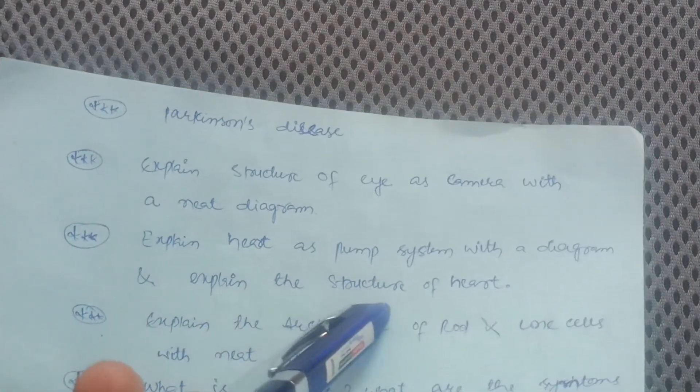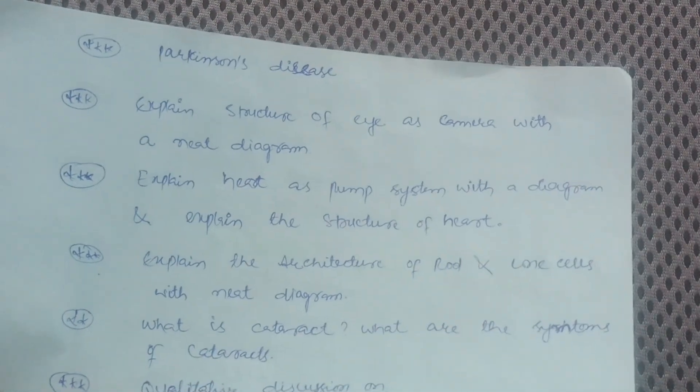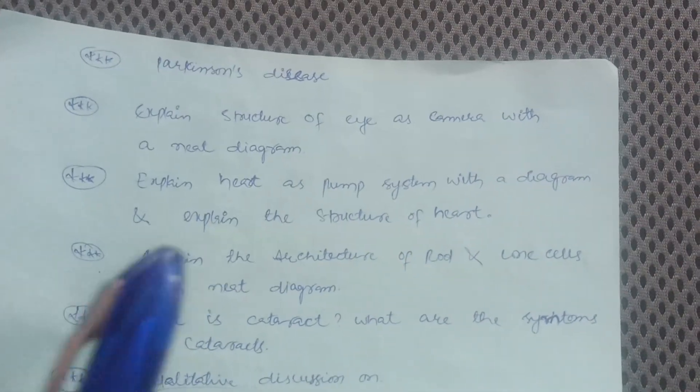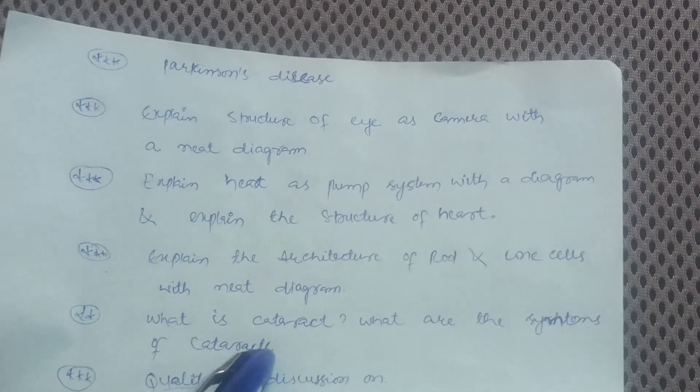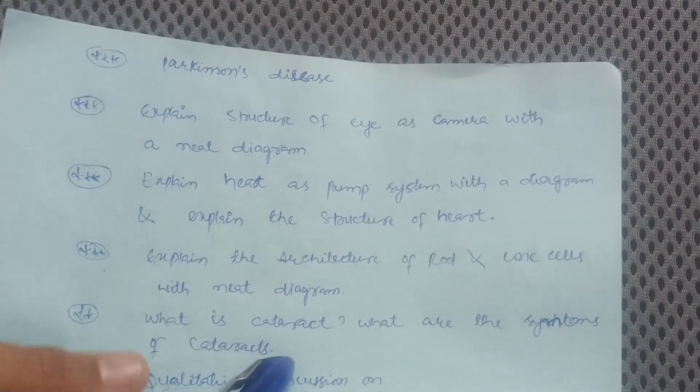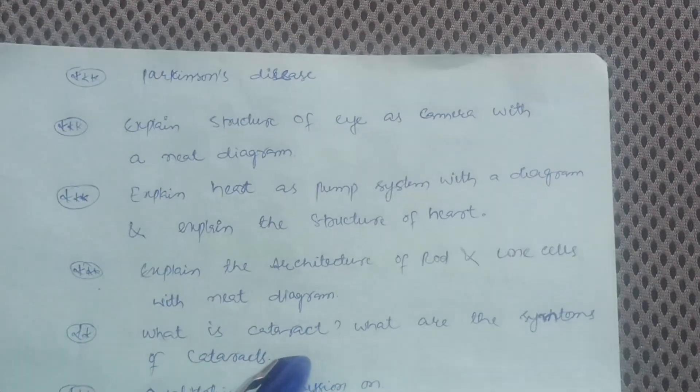Explain heart as a pump system with a diagram and explain the structure of heart. Explain the architecture of rod and cone cells with the neat diagram. Next one is what is cataract, what are the symptoms of cataract. You may already be aware in the PU classes about the definitions of these cataracts.